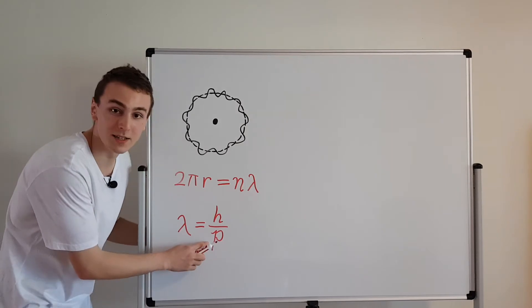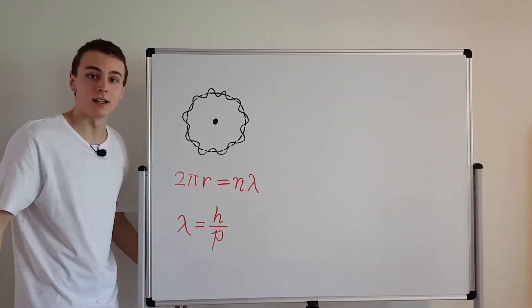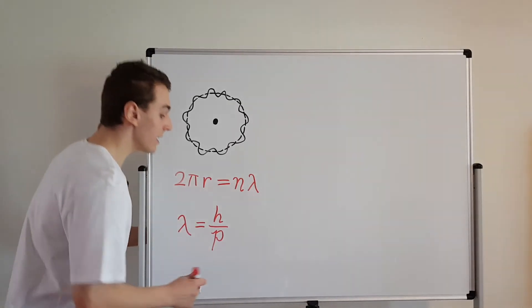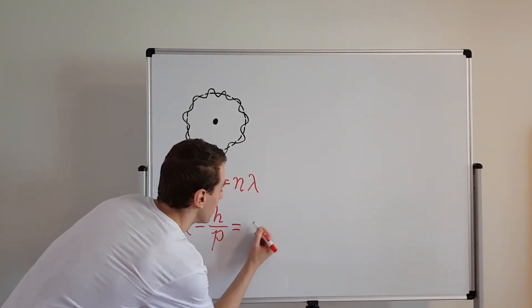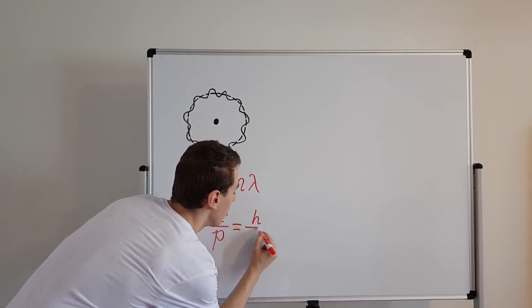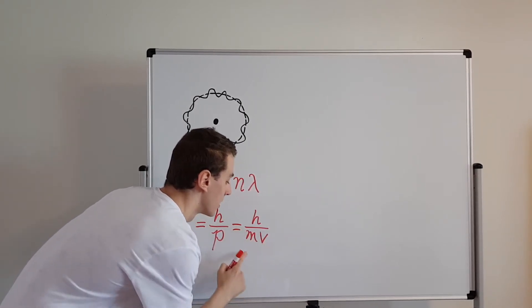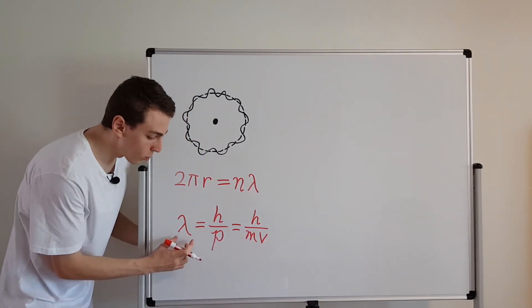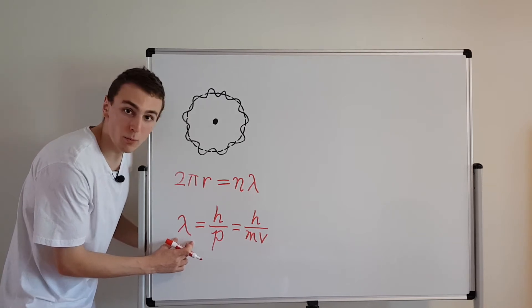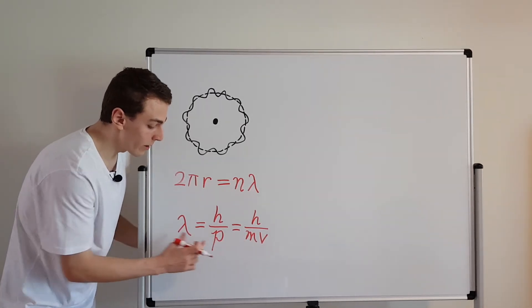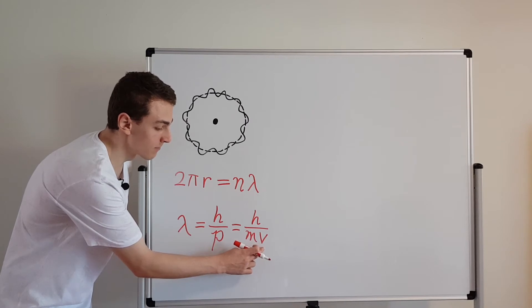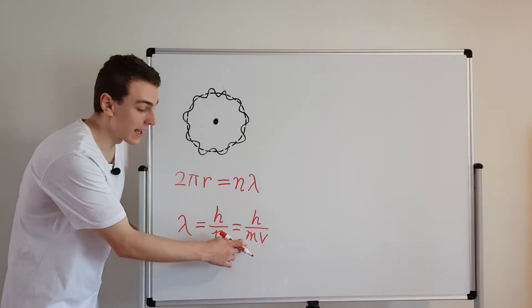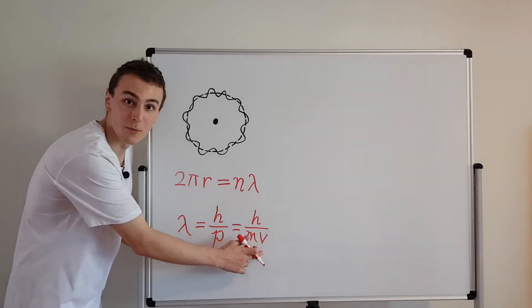How can we write this momentum in a different way? Momentum, we know in classical mechanics, momentum is the product of mass and velocity. So let's go ahead and write that over here. So we have h over m v. So this is the mass and this is the velocity. So have a look at this relationship. The wavelength is inversely proportional to mass. And the wavelength is also inversely proportional to velocity. So the wavelength is actually going to depend on how massive the particle is. And it's also going to depend on how fast the particle is moving.